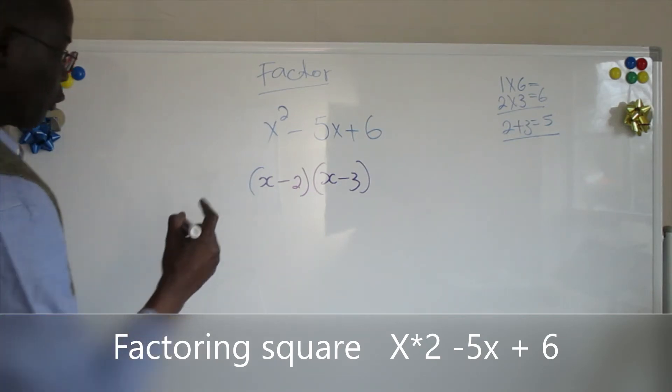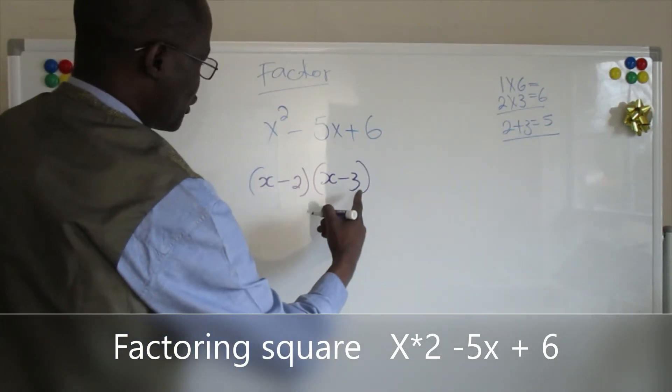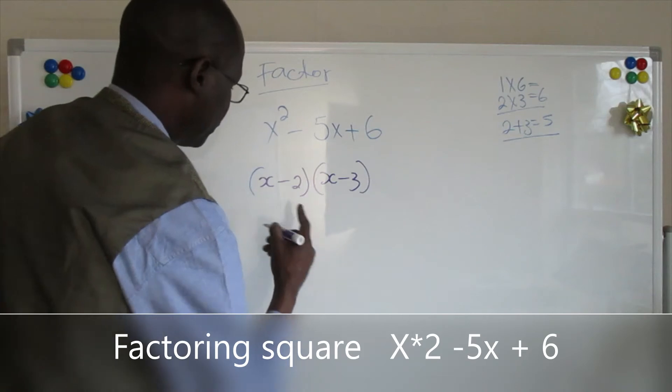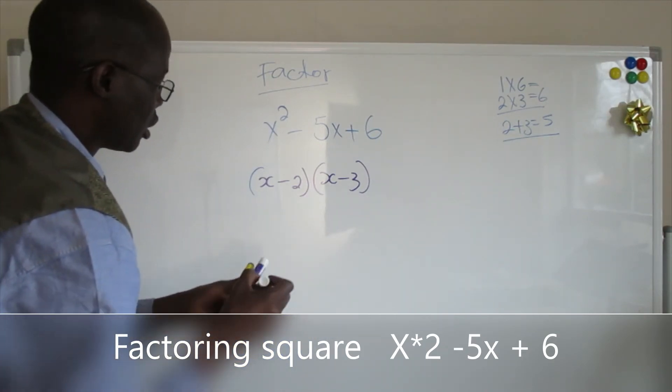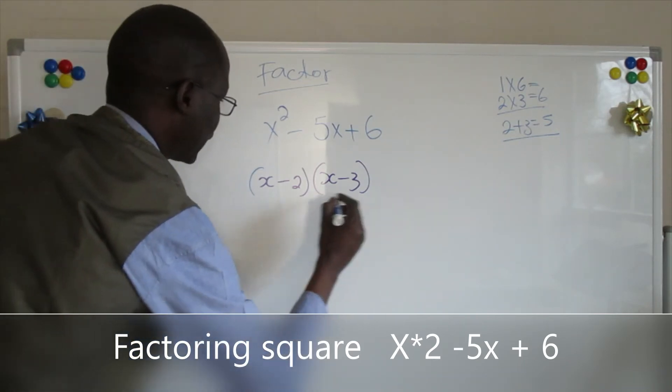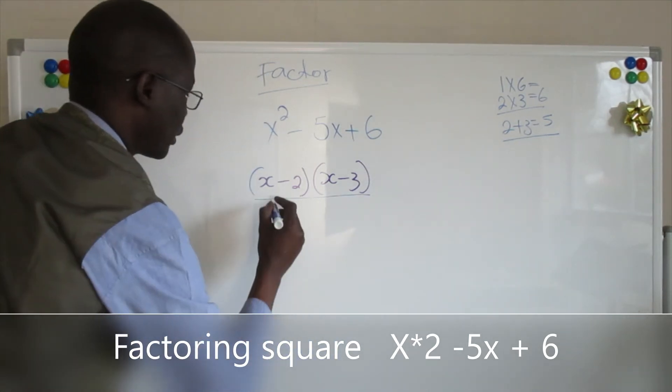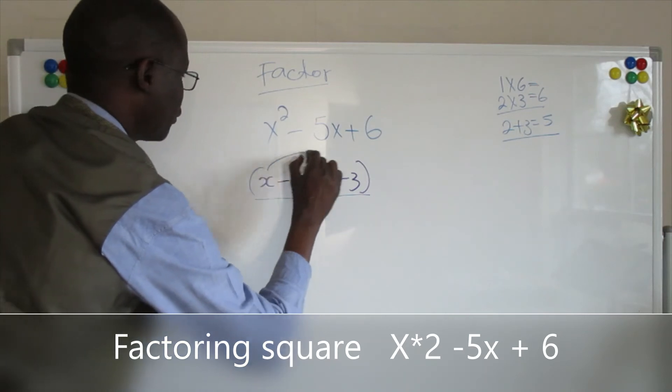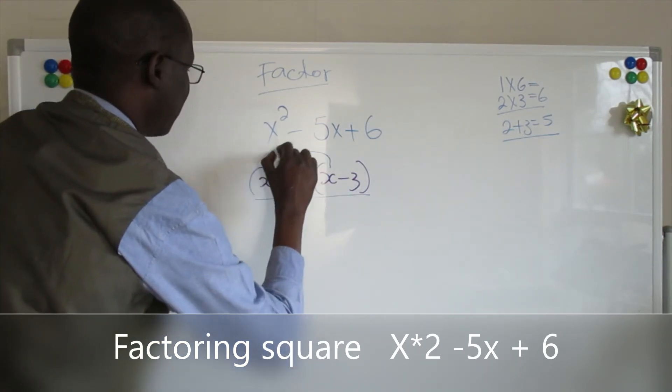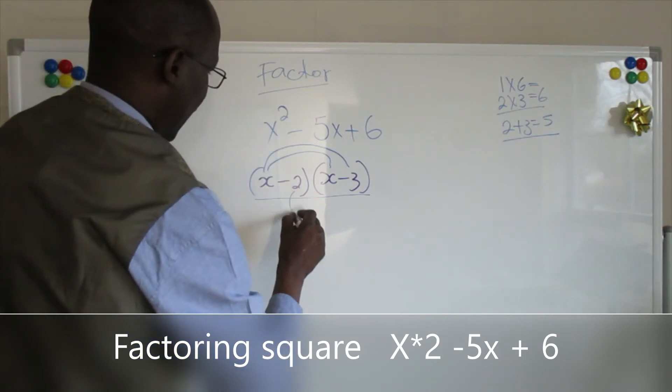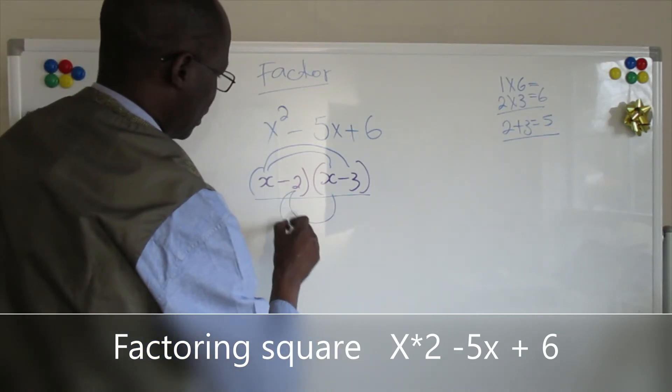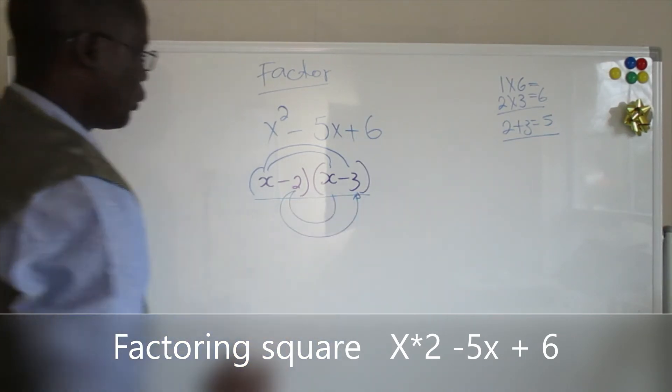And to prove that you got the right answer, you always do multiplication. So let's try that so we can make sure we got it right. So what do you do? You do the first one and the first one here, and the same thing with the bottom. Go this way, go this way, and then you combine the result.